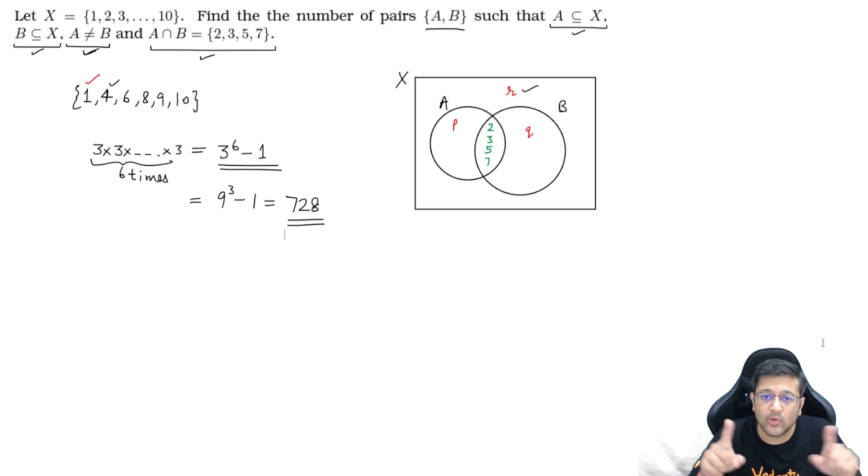So 728 is your answer. In IOQM they can very simply ask you what is the sum of the digits or something. If sum of digits is asked, 17 will come. It can easily be conformed to the form of IOQM. That is not a big deal. But the method of solving should be clear. Using Venn diagrams makes it very easy.